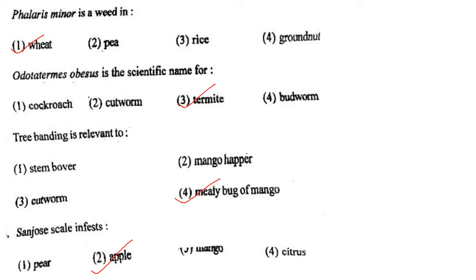Next one: Phalaris minor is a weed in option 1, wheat; option 2, pea; option 3, rice; option 4, groundnut. Answer is option 1: wheat.